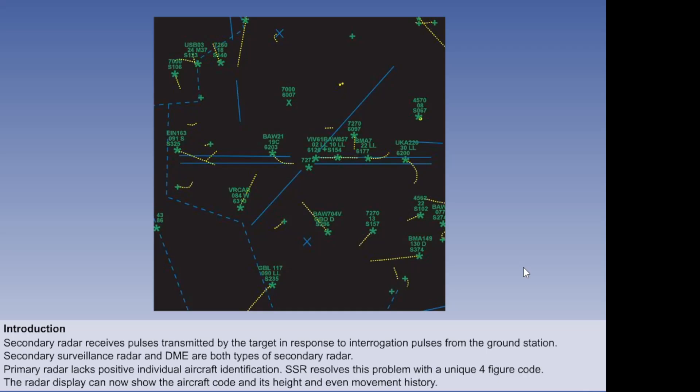The radar display can now indicate not only the aircraft's position in range and bearing, but also the four-digit code, known as squawk, which can be associated with an aircraft call sign and hence its identity. In addition, height information and track history can be displayed.